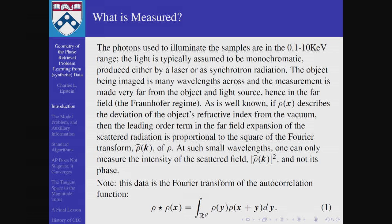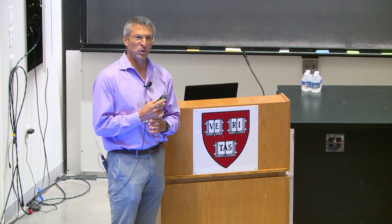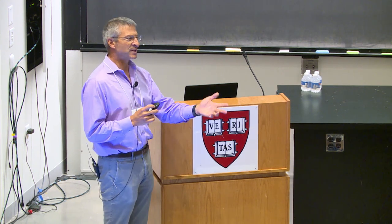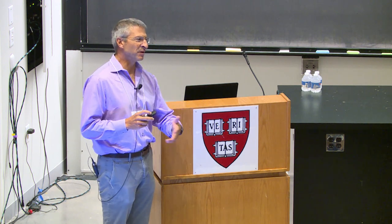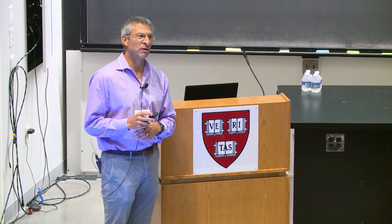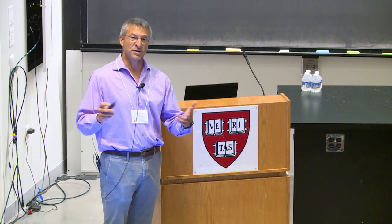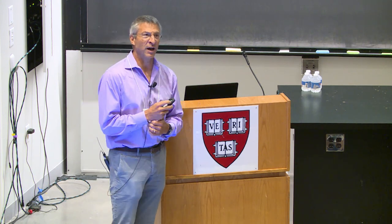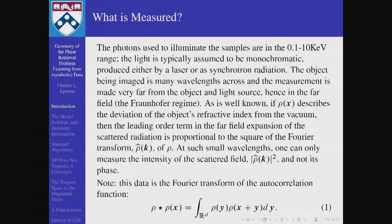It used to be totally unobtainable and now it's very easy to get. Every particle accelerator in the world besides CERN became obsolete when they built CERN, so they had to find something to do with all these old particle accelerators and they turned them into what are now called advanced light sources. The advanced light sources produce very high quality monochromatic radiation and you can get time on the beam and illuminate your samples.